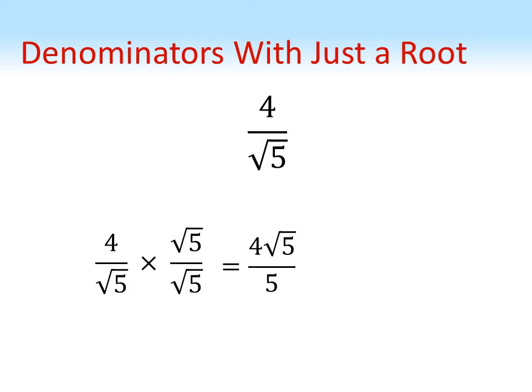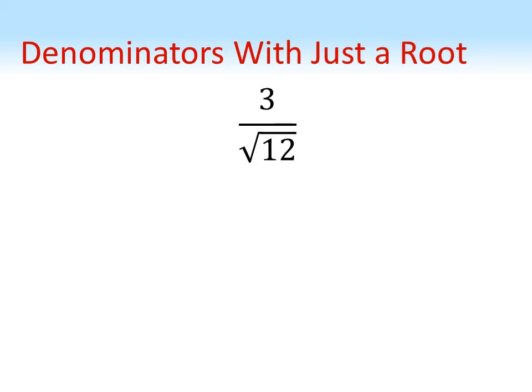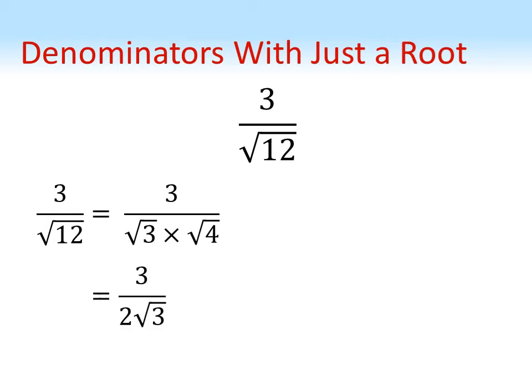Sometimes it'll be much easier to rationalize the denominator if we first simplify it. In this example we've got three over root twelve. Root twelve is equal to root three times root four. We've done this because root four is equal to two, so we can simplify three over root twelve to three over two root three. Now we haven't rationalized the denominator yet - there's still that root three there - but the method we're going to use is very similar to the last one.